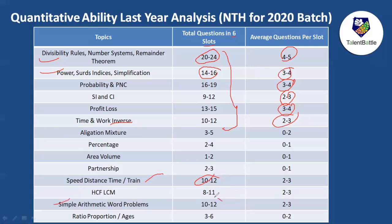Simple arithmetic word problems also appeared and will be covered in upcoming YouTube sessions. Topics like allegation and mixture had only three to five questions across six slots — zero to one question per student. Other low-frequency topics include percentage, area, volume, partnership, ratio and proportion, ages, and HCF and LCM.